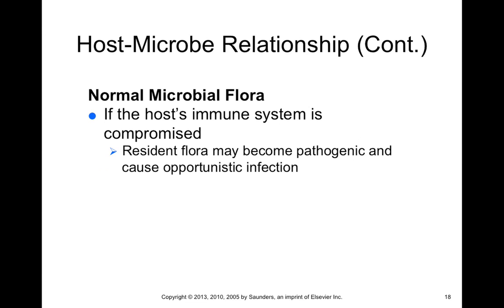If the host immune system is compromised, resident flora could become pathogenic. For example, Clostridium difficile or C. diff can cause disease in humans, and it turns out most people — chances are everyone — have a certain degree of this microorganism as part of their normal flora. As long as someone has a normally functioning immune system, C. diff shouldn't cause disease. However, if they're immunosuppressed or other microbial flora are disrupted, C. diff may flourish in abnormal numbers and cause disease, leading to opportunistic infections.